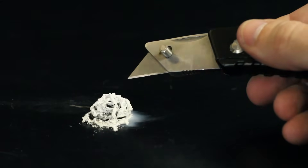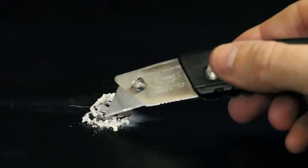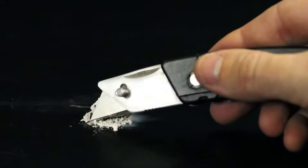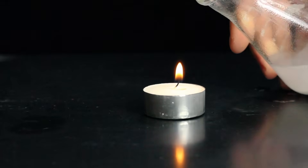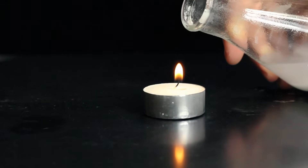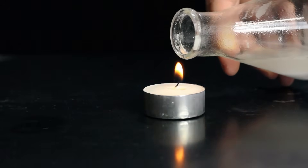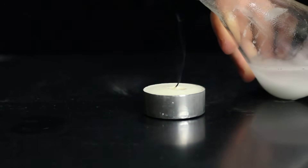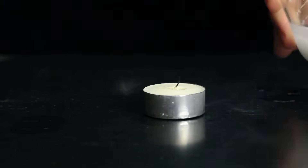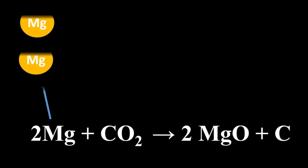Many things burn with the presence of oxygen. What separates magnesium is its ability to burn even without oxygen. For example, when we pour the carbon dioxide gas out of the flask, the candle is extinguished and the burning reaction stopped. Burning magnesium, however, is different — the reaction by which magnesium burns can use oxygen or carbon dioxide as a fuel.